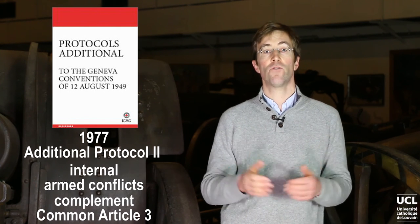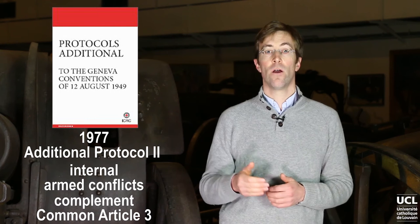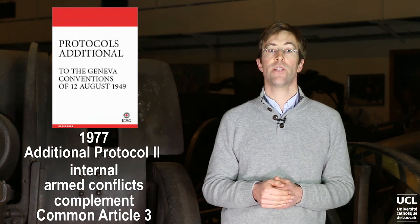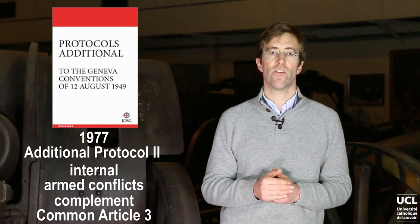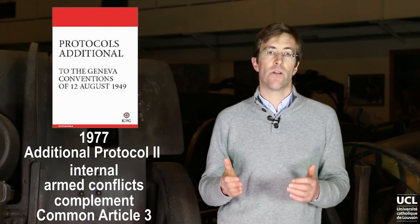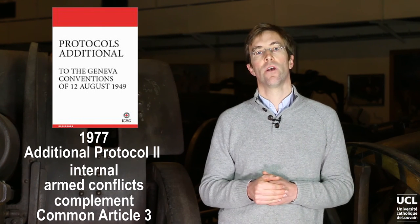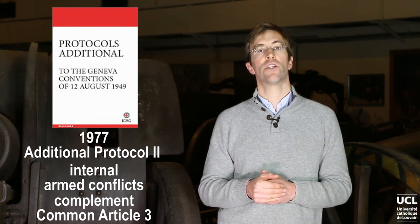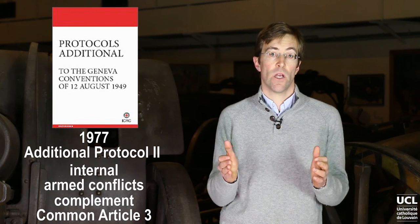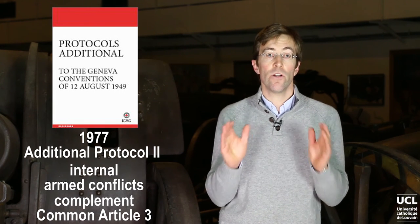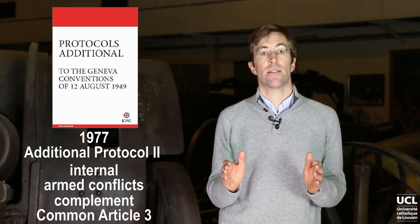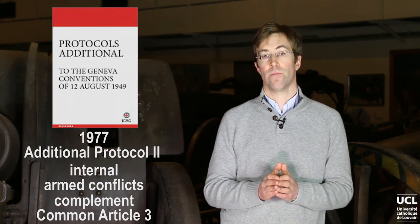The initial draft of Protocol 2, prepared by the ICRC, contained hundreds of provisions. However, it was significantly shortened during the negotiations between States, because governments were reluctant to encourage and or legitimize resistance to their rule.